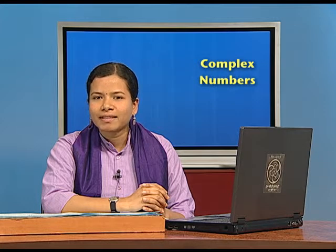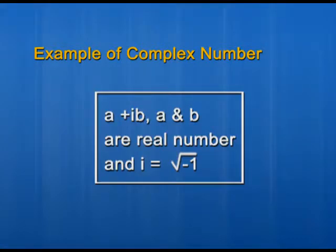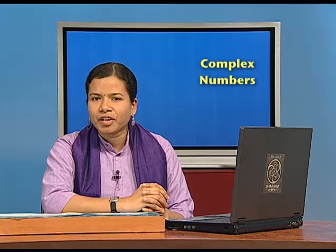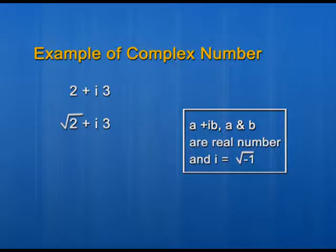Let us see how we can form examples of complex numbers. According to the definition, numbers of the form a plus ib are called complex numbers, where a and b are real numbers and i is the square root of minus 1. We can choose a and b to be any real numbers. In the first example, taking a and b as integers, we form 2 plus i3. In the second example, taking a as the irrational number root 2 and b as the integer 3, we get root 2 plus i3. In the third example, taking a as the rational number 1/11 and b as the irrational number root 5, we get 1/11 plus i times root 5.